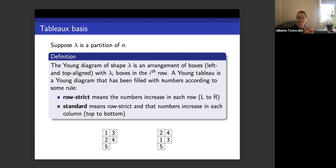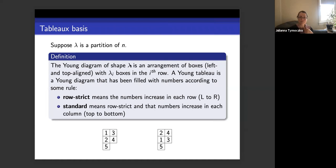We have two basic rules: row strict means numbers increase in each row from left to right; standard means both row strict and column strict — numbers also increase in each column top to bottom. In the two examples at the bottom of the screen, both are row strict. Only one is standard: the one on the left has columns 1, 2, 5 and 3, 4, which are both increasing. The one on the right has two rows exchanged, so it's no longer column strict.